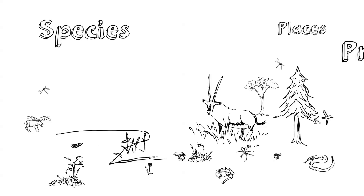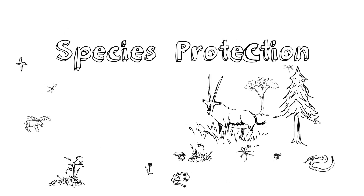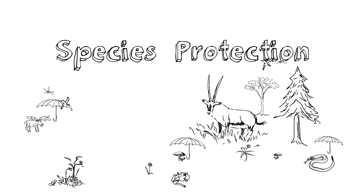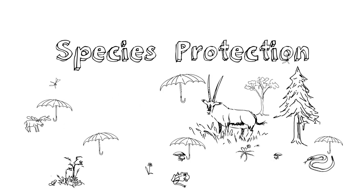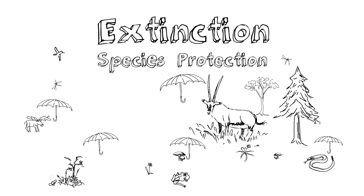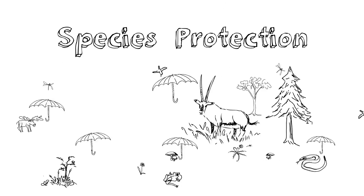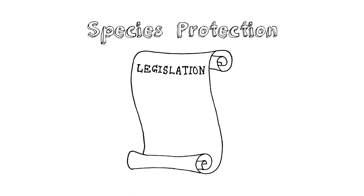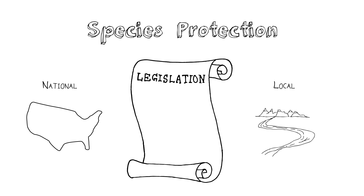Let's start with techniques that can protect species. Species protection is valuable because it can be used to prioritize which species are most in need of being saved before they face the biggest deadline of all — extinction. Species protection can include legislation at national or local levels to protect organisms that most need protection, through things like the Endangered Species Act.